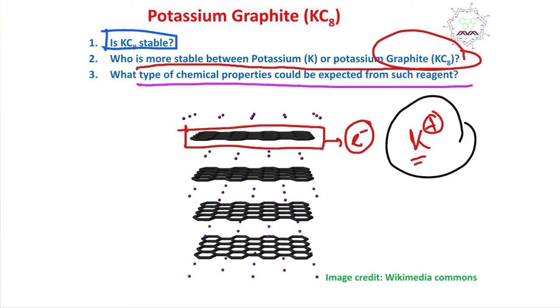What type of chemical properties could you expect? Potassium plus is very less reactive or non-reactive because it is stable. Then who is reactive? This excess electron-rich graphite. Since it is electron-rich, we can expect that it can act as a reducing agent.